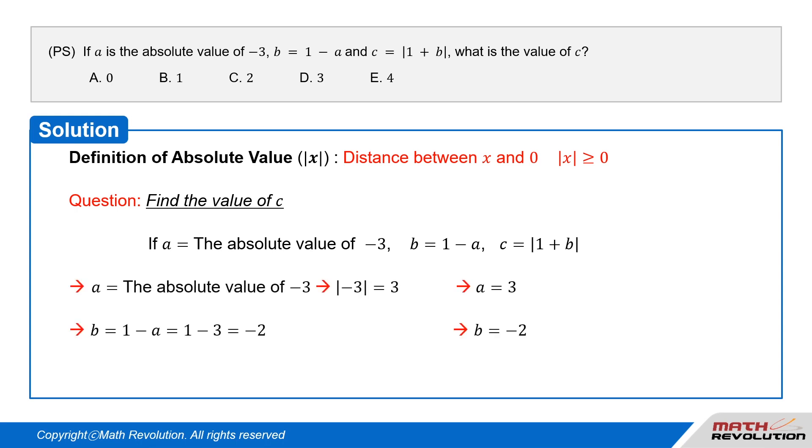A equals the absolute value of -3, which equals 3. B equals 1 minus A, which equals 1 minus 3, equals -2.